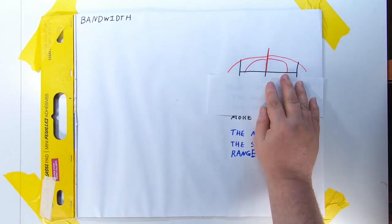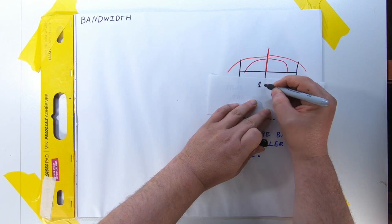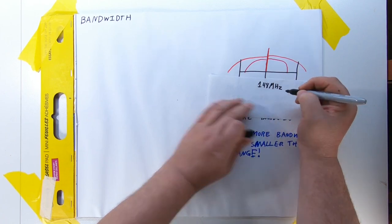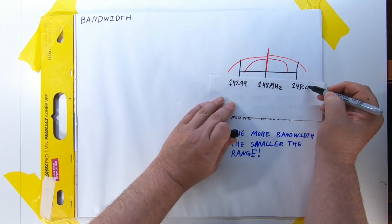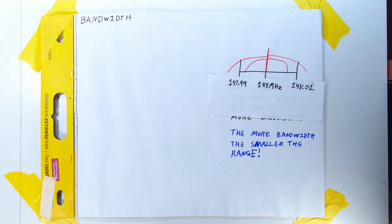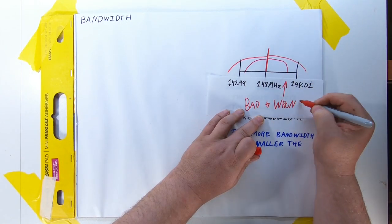As an aside for the test, this is why we have to be careful when we try to transmit on the edge of the ham radio band. If we transmit so close to the band edge that our signal goes over the edge, we're breaking the rules. This is considered bad and wrong.